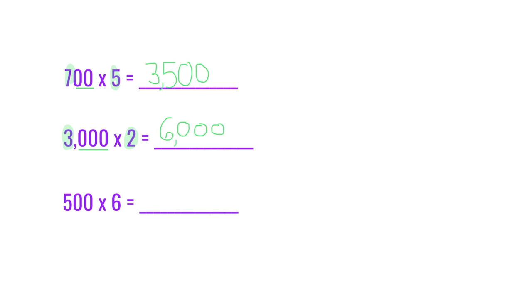Our last one is a little trickier because for our basic fact of 5 times 6, it's 30. There is a zero in 30 already, but you still need to add the two extra zeros from 500. So even though there are two zeros in the problem, there will be three zeros in your answer because one of the zeros is from the basic fact.